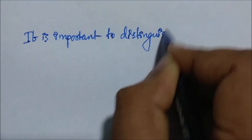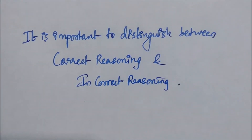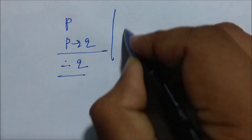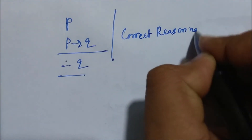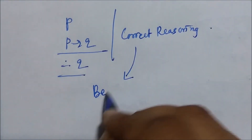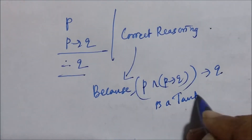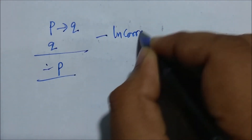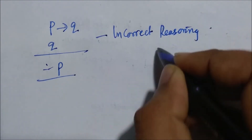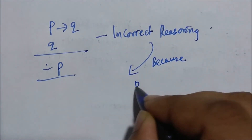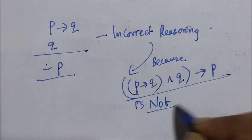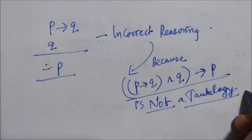It is very important to distinguish between correct reasoning and incorrect reasoning. If P has happened and P implies Q has also happened, we can conclude that Q has happened. This is correct. However, affirming the consequent — using P implies Q and Q to conclude P — is incorrect reasoning, because P implies Q and Q implies P is not a tautology; it is false when P is false and Q is true.